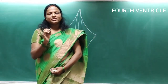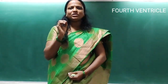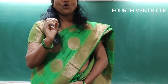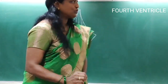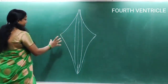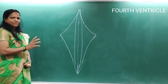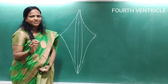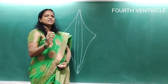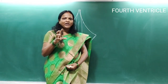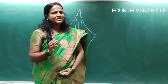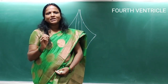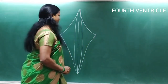Continuing with the fourth ventricle, coming to the floor of the fourth ventricle. This is the diagram for the fourth ventricle, which is rhomboid in shape, and that is the reason it can also be called as the rhomboid fossa.